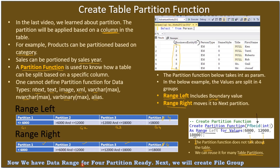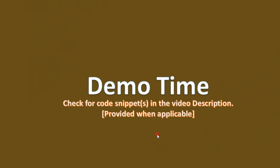Now we have the data range for four partitions ready. Our next step will be creating the file group. Now we will go to SQL Server Management Studio and create this partition function — let's go to the demo.